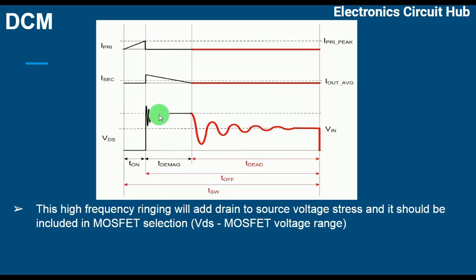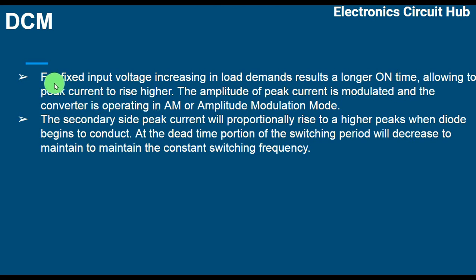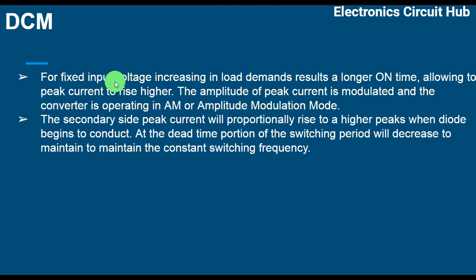This ringing can also cause EMI failure in your power supply, so damping it down as much as possible is useful for EMI testing. For a fixed input voltage, increasing load demand results in a longer on time, allowing the peak current to rise higher. The amplitude of peak current is modulated and the converter operates in amplitude modulation mode. The secondary side peak current rises proportionally, while the dead time portion decreases to maintain constant switching frequency.